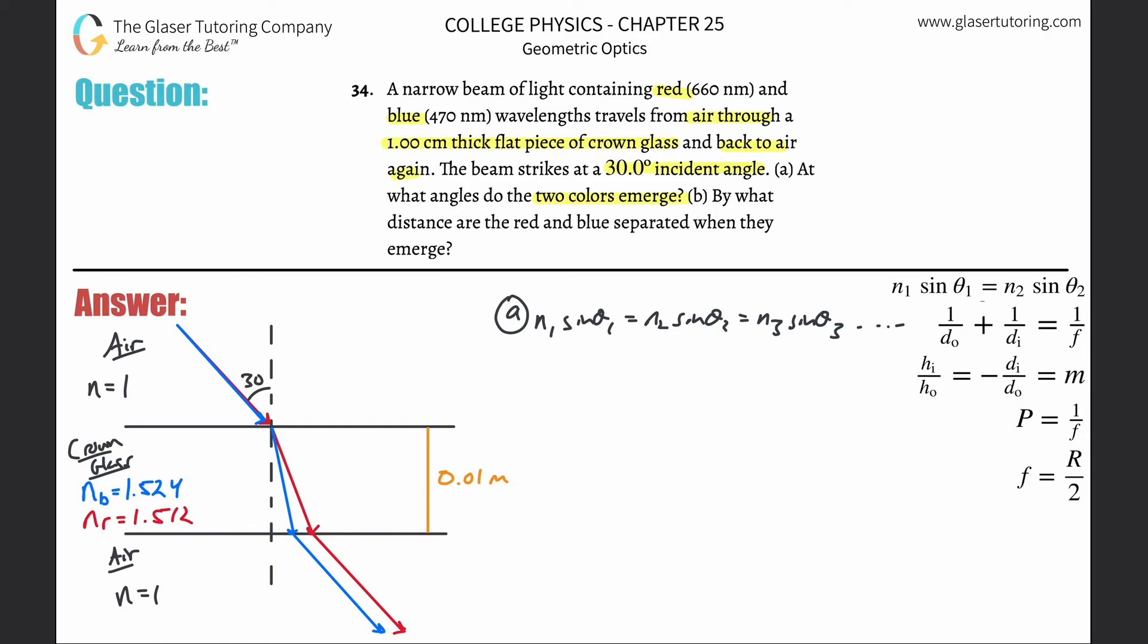That takes care of letter A. Basically, if you want, calculate it out, but you don't really need to. For letter A, the answer is 30 degrees relative to the normal. And then letter B: